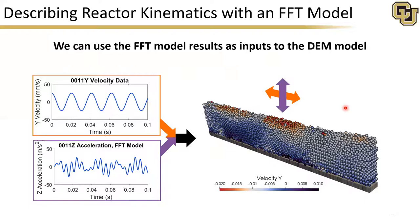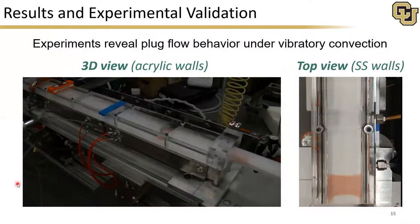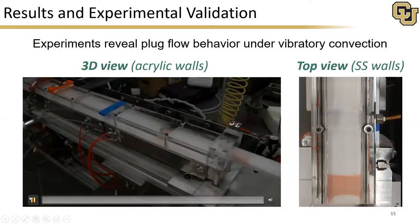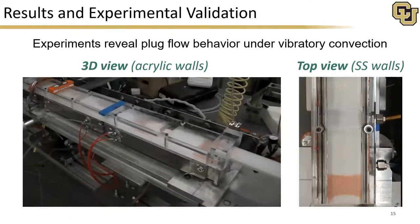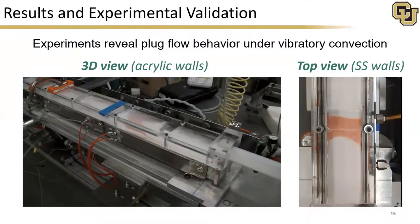Before we can look at simulation results, we need to know what actually happens in the experimental setup. So we replaced the stainless steel upper chamber with an acrylic flow channel and dyed 50-micron glass particles to act as tracers in the flow. By looking at these experimental results, we can see there is fairly good plug flow behavior under vibratory convection. We can also see that if we replace these acrylic walls with stainless steel shim tape — which more accurately mimics the stainless steel upper chamber — we get even better plug flow behavior.